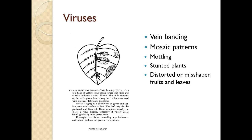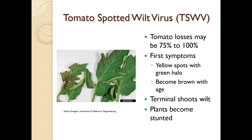Viruses can cause vein banding, mosaic or mottling patterns, stunted plants, and distorted or misshapen leaves or fruits. Here we have tomato spotted wilt virus - you may lose up to 100 percent of your plants. The first symptoms are yellow spots with a green halo that become brown with age; terminal shoots will wilt and plants will become stunted.